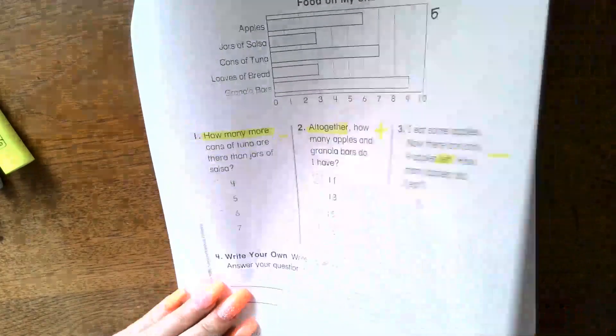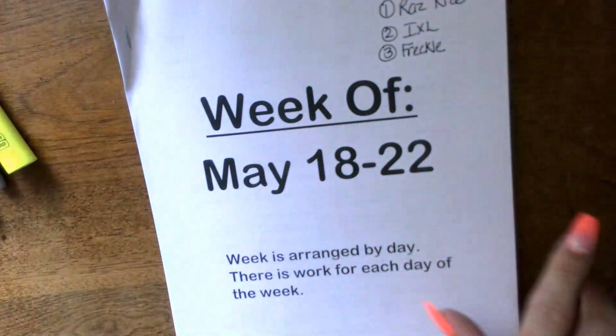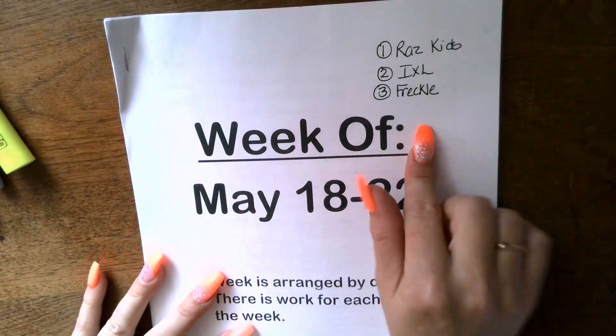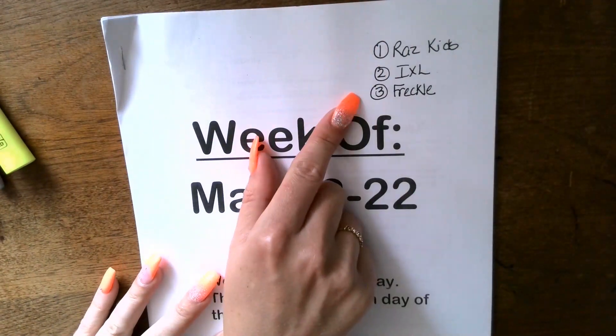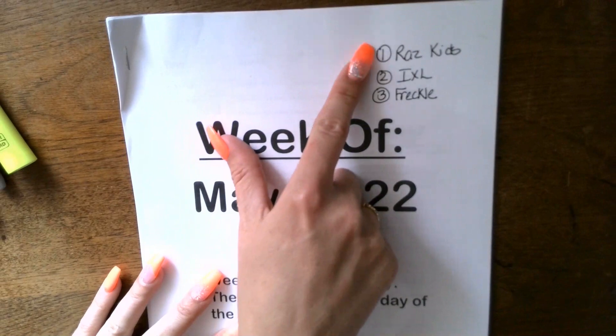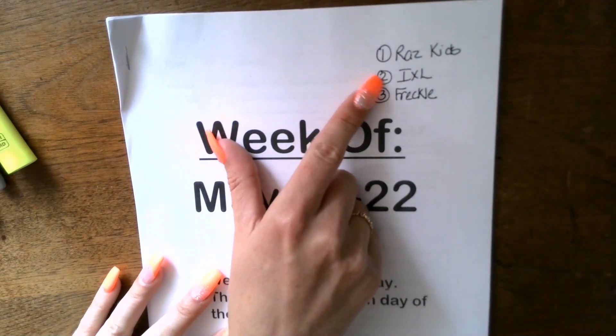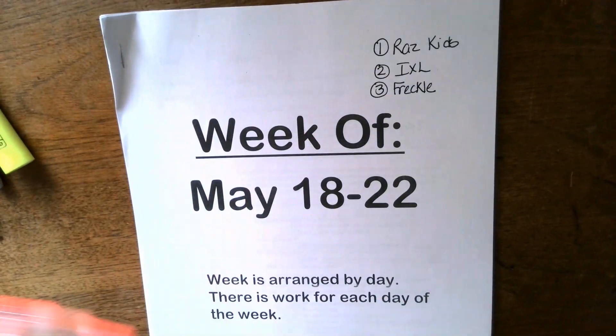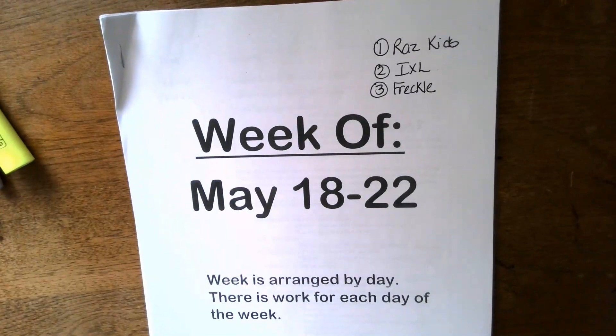Make sure you're being kind to your brothers and sisters. It's very important. Make sure you do something to help around the house today. Make sure you get outside because that's good for your mental health. Make sure when you're doing your computer programs, you're doing it in this order. This is the order of importance here: Razz Kids being the most important, iExcel, and then Freckle. All right boys and girls, have a great day. We miss you. Bye!